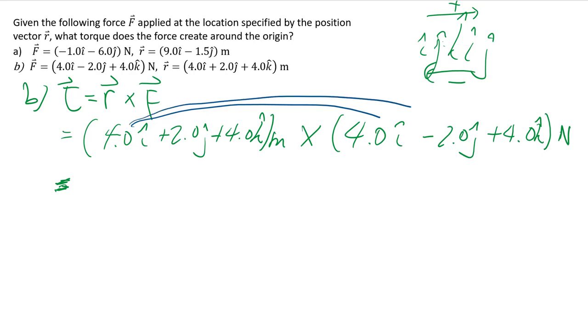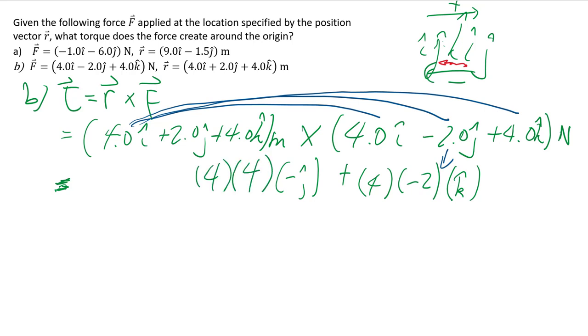Then we have I cross J, and I cross J, I know will give me a K. So I'm going to write it in this third column here. So then we have 4 minus 2 I cross J, which is a K. Then we're going to do I cross K. I cross K, you have to go the other way, so I cross K gets you negative J. So I'm going to put that in this kind of middle column here, put a plus sign. So we have 4, positive 4, and then positive 4, negative J, just like that.